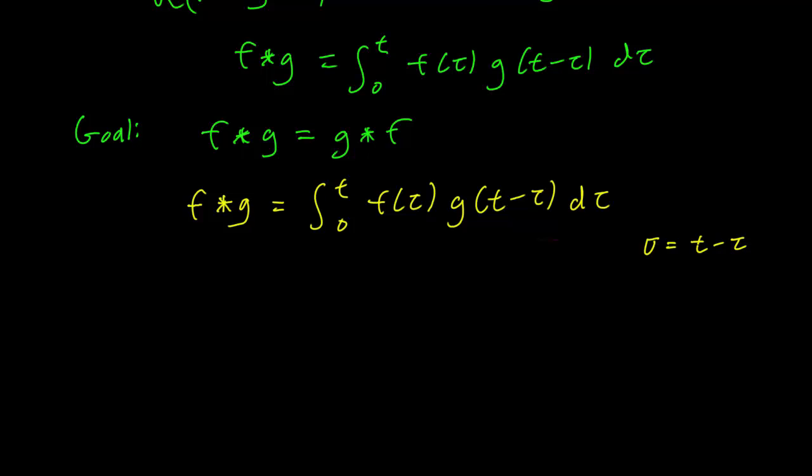So the variable here is tau, so we are differentiating with respect to tau. And so clearly d sigma is equal to minus d tau, because here t is a constant in this world, because you're integrating with respect to tau.